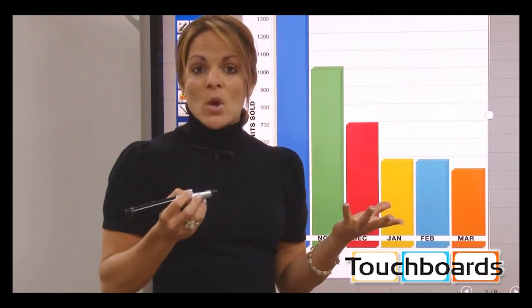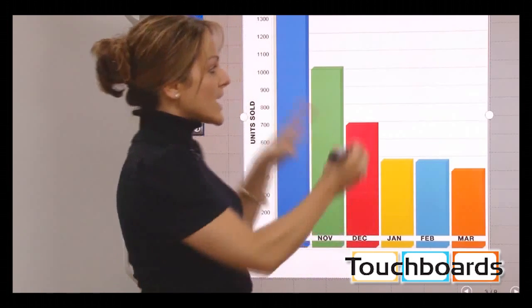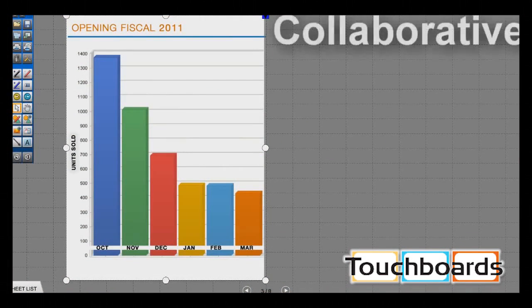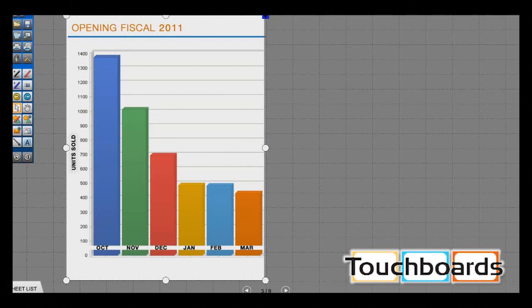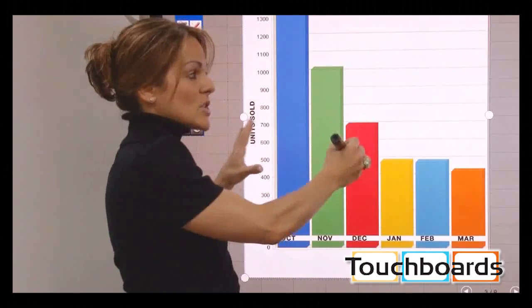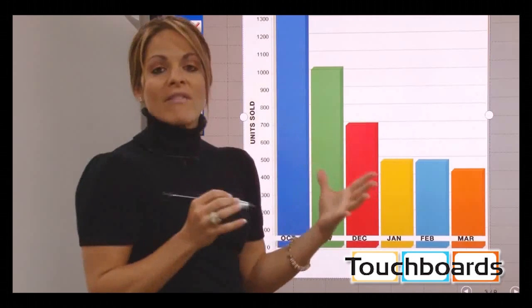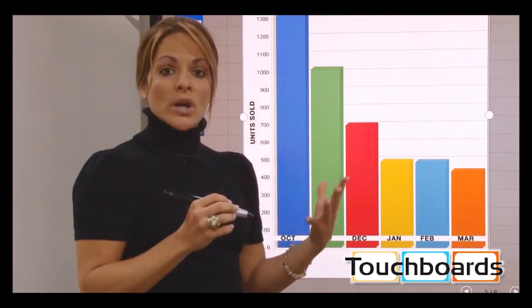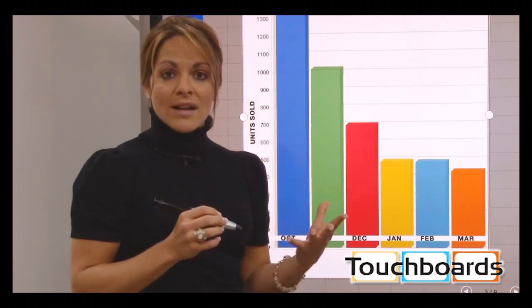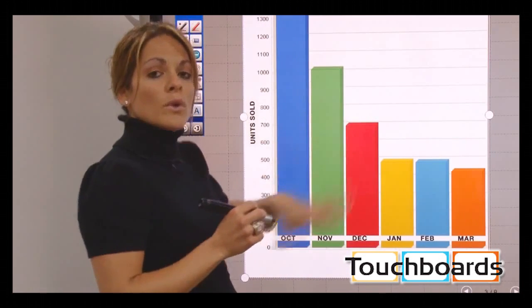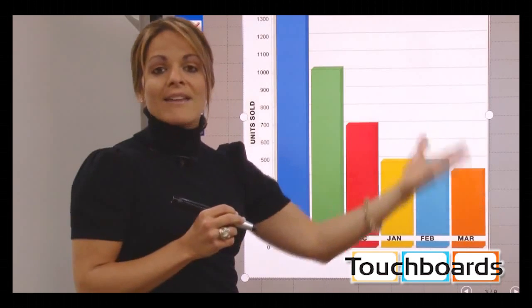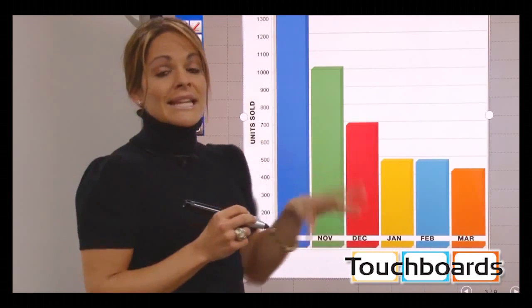Now we're in a boardroom giving a presentation. One of the great aspects of the new 2.4 software is that it's collaborative. If we have a satellite office in California and we're doing a web conference, both parties can look at the same images on the Sharp Aquos Board in real time. The systems are interactive, so whatever I draw on this board is shown on that one instantly, and vice versa.